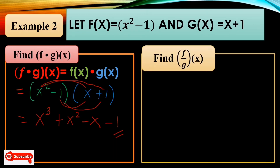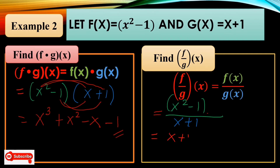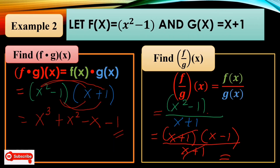Now find f/g(x) = f(x) over g(x) = (x² − 1)/(x + 1). We can factor x² − 1 as (x + 1)(x − 1) over (x + 1). Cancel the common factor (x + 1), so the answer is x − 1. This is the quotient of f and g(x).